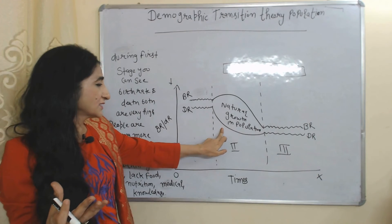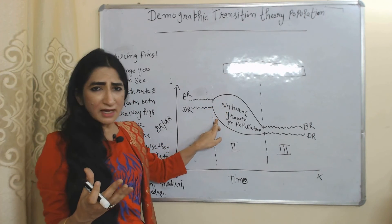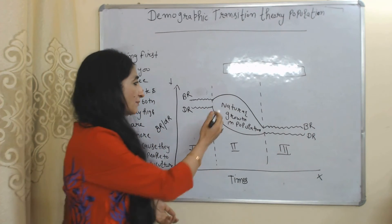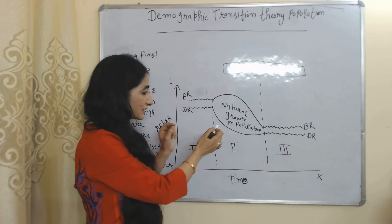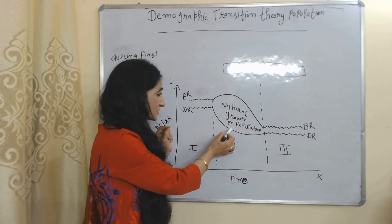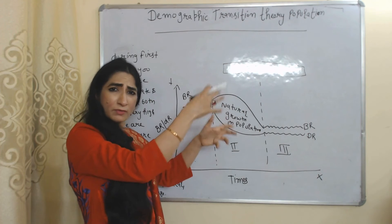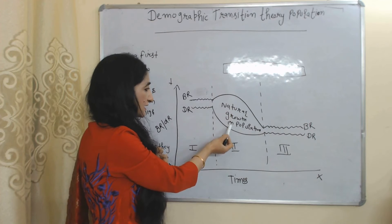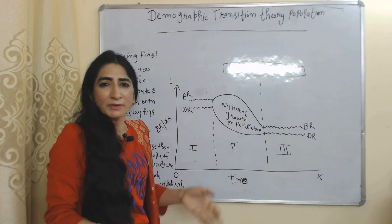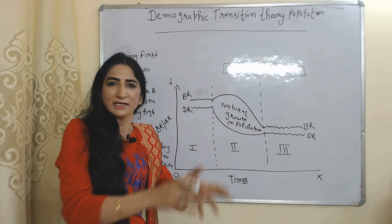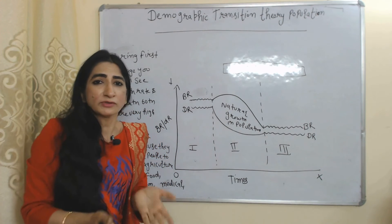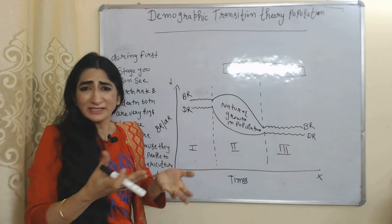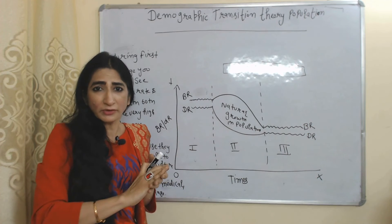During the second stage, initially birth rate and death rate are very high, but as we grow and become more industrialized, both start declining. Death rate declines very fast compared to birth rate, so overall birth rate remains high compared to death rate. The difference between birth rate and death rate is called natural growth in population. Death rate declines faster because now we are getting proper food, nutrition, healthcare facilities, and knowledge about health care.